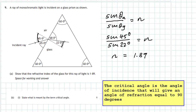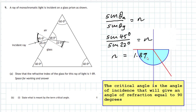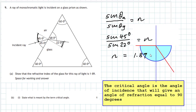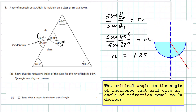The critical angle is the angle of incidence that will give an angle of refraction equal to 90 degrees. You can see the critical angle in this quick diagram — the angle comes in, we call that theta c, between the ray of light and the normal. The ray of light travels along the surface, and the angle of refraction is 90 degrees. So theta c is the critical angle.